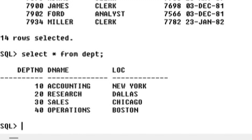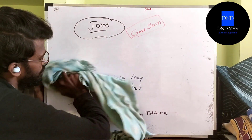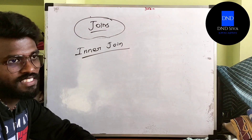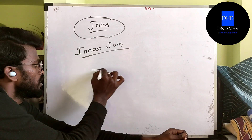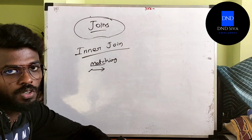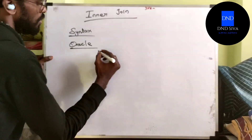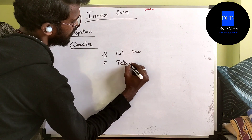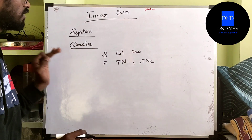What is the next join? What is the inner join? The syntax for inner join uses a column name. The format is: SELECT column name or expression FROM table name 1 JOIN table name 2.